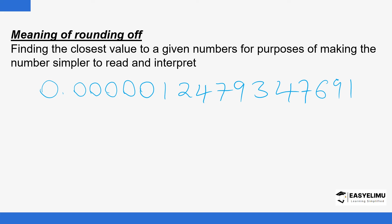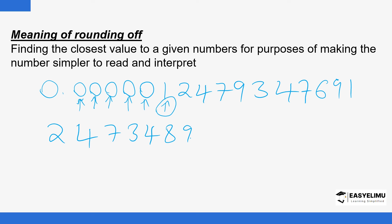If you check the place value — and we've looked at place values before, so if you have trouble with place values you can check our previous videos — we have tens, hundreds, thousands, ten thousands, hundred thousands, and millions. Maybe you can round off to the nearest million just to make the number simpler to read. Similarly, a large number like 472,434,897,249,234 would be very tedious to read in full.